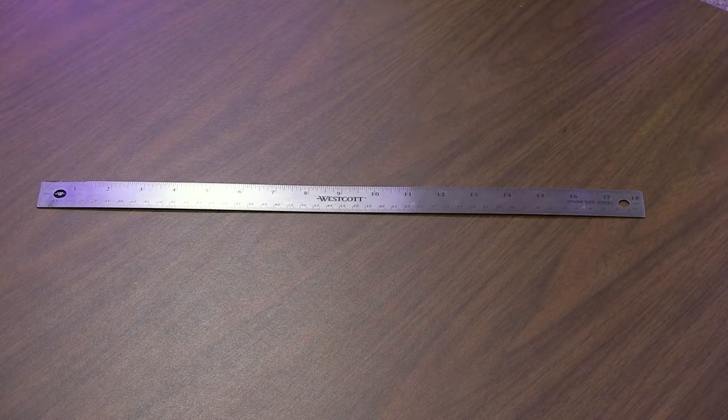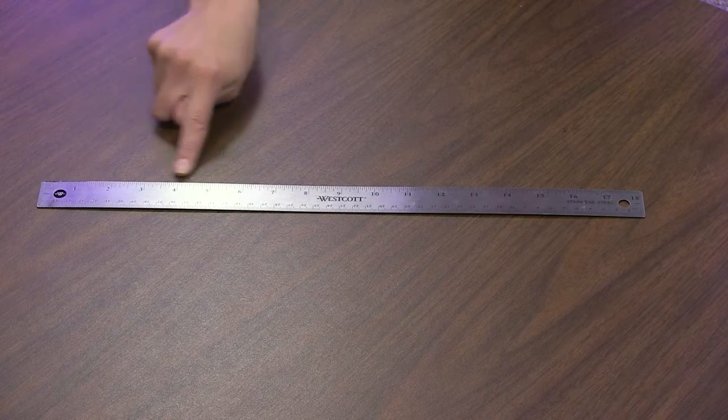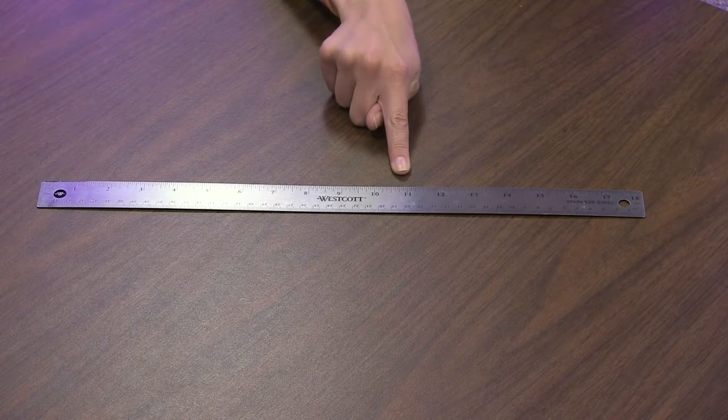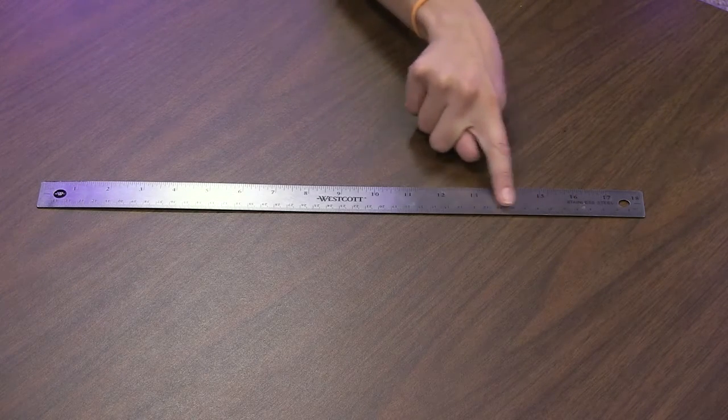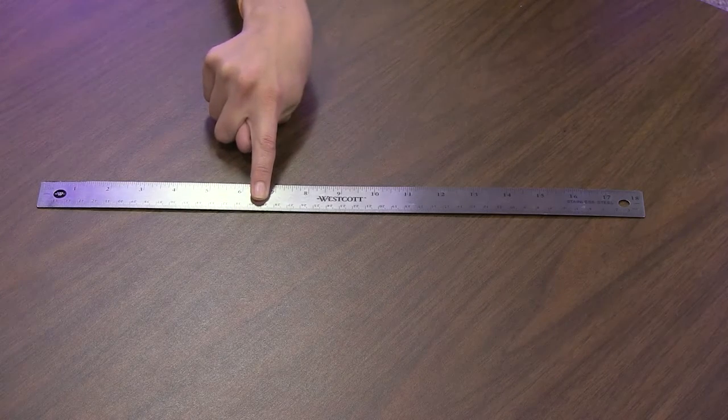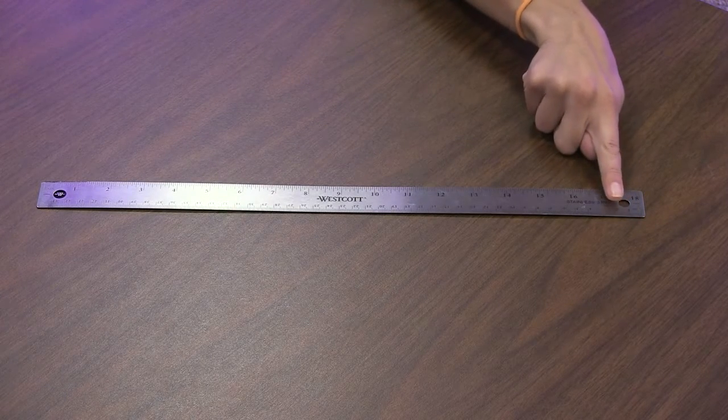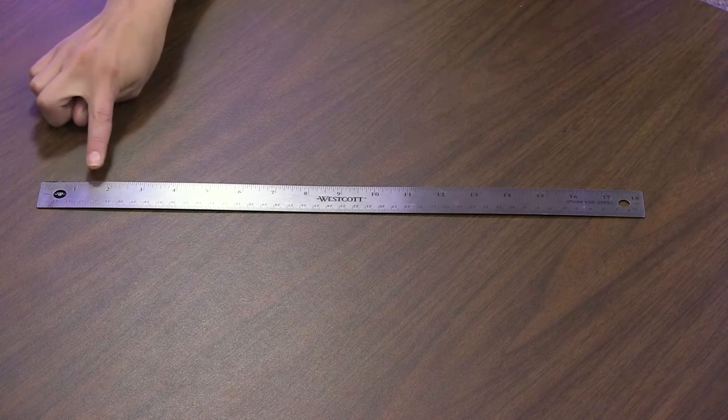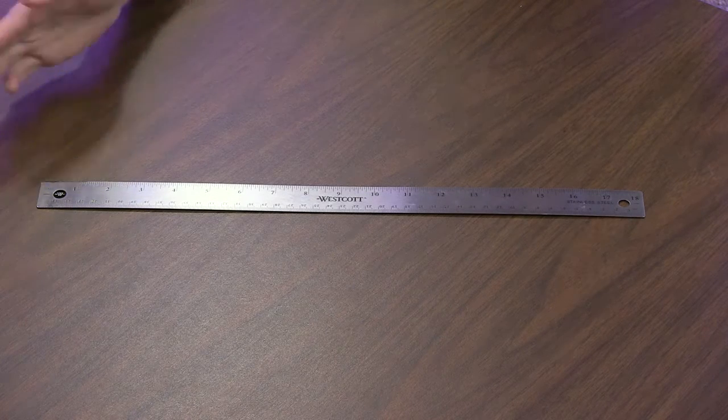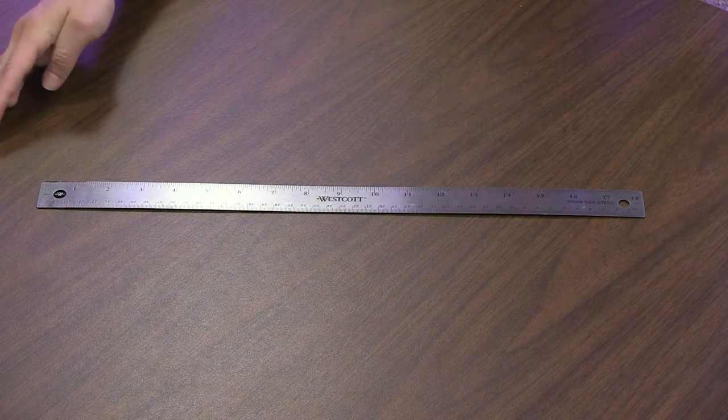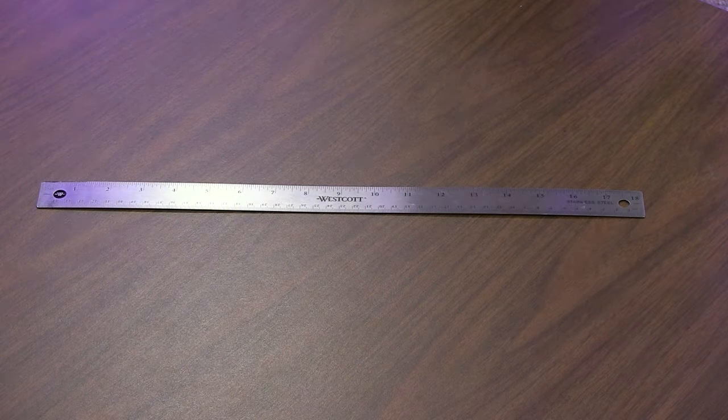Look at this ruler. One side uses inch measurements, while the other side uses centimeter measurements. The spacing between the numbers is consistent on both sides, but is different from the other side because a different whole is being used.